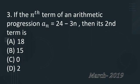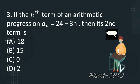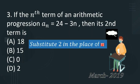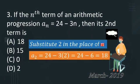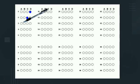So the question is taken from March 2019 question paper. Here also only mental work, no need to do paperwork. The similar type of question as the first one. Substitute 2 in the place of n because we want to find second term. So 24 minus 3 into 2, that is equal to 24 minus 6, that is equal to 18. So the correct option is A here.